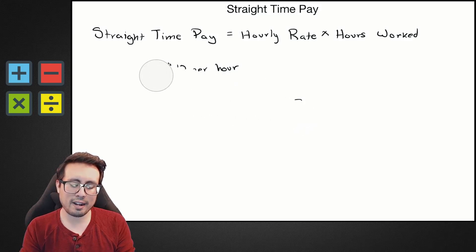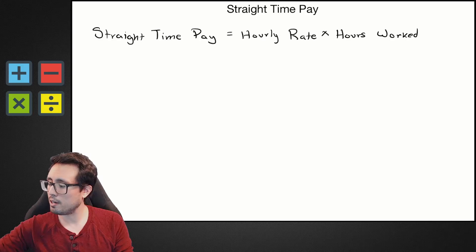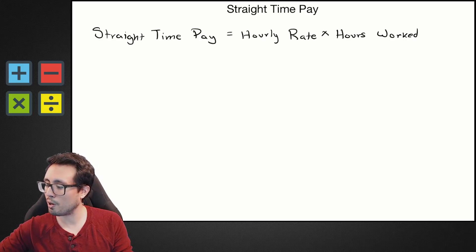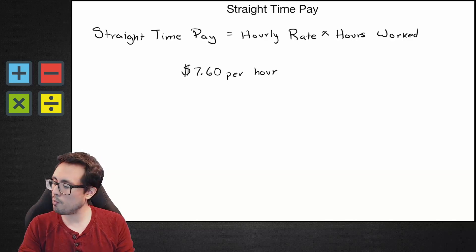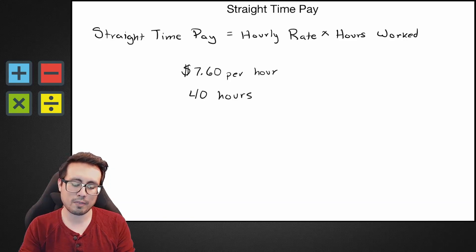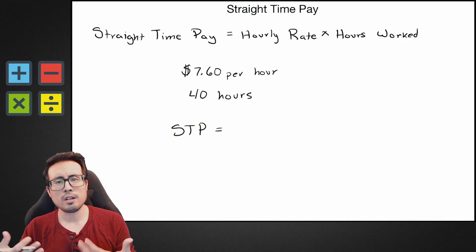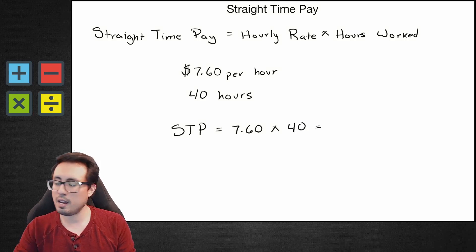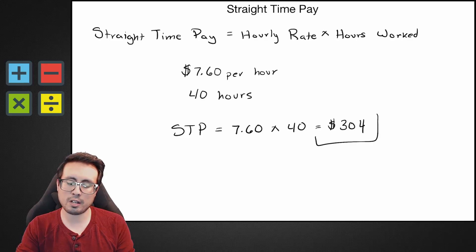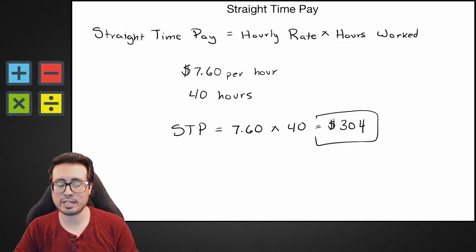Let's look at another one — feel free to pause the video and work it out before checking the answer. Let's say we have a job where we make seven dollars and sixty cents per hour, and this week we worked 40 hours. Plugging into the equation: $7.60 times 40 gives us $304. So $304 is our straight time pay, or STP.